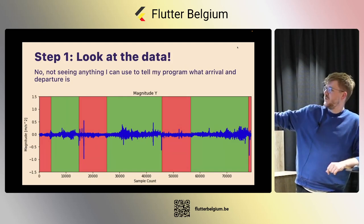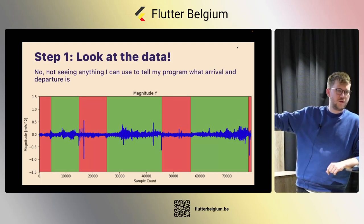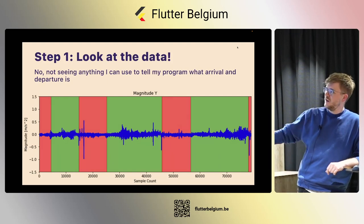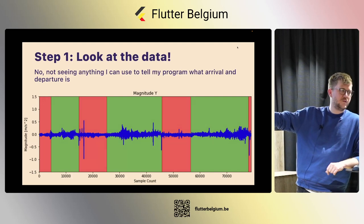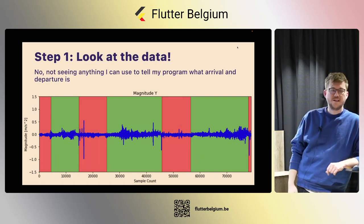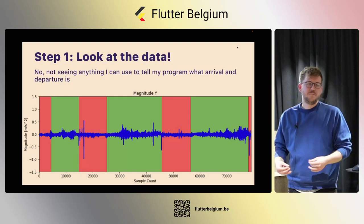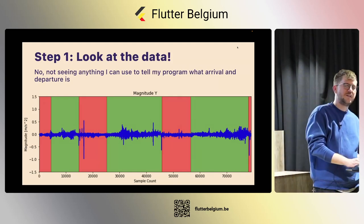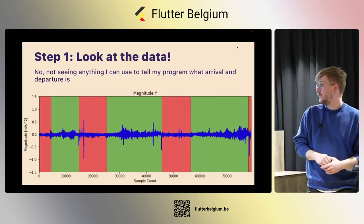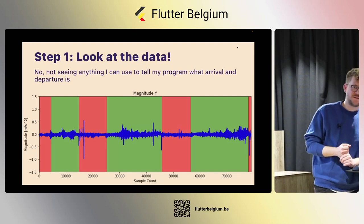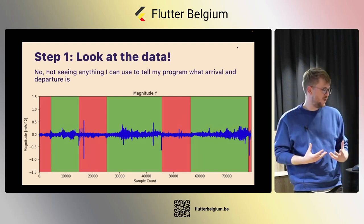On the graph, the green parts were driving and the red parts were stopped — at the platform. On the y-axis is the magnitude of acceleration; on the x-axis is the sample index, similar to time. Looking at this raw data, I see a curve with a lot of fluctuations, but there wasn't really anything we could do with it yet.